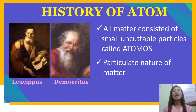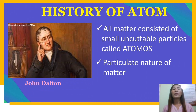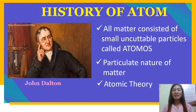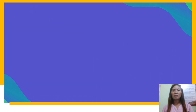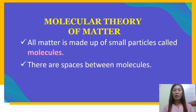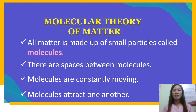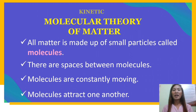Ancient philosophers' idea about atoms became a theory. John Dalton did many observations and used results of several experiments done by other scientists and formulated the so-called atomic theory. Early scientists also attempted to explain the composition and behavior of matter through the molecular theory of matter. This theory has the following assumptions: 1) all matter is made up of particles called molecules; 2) there are spaces between molecules; 3) molecules are constantly moving; 4) molecules attract one another. This theory was later improved and named the kinetic molecular theory.